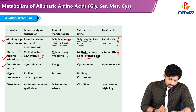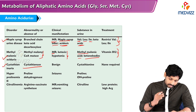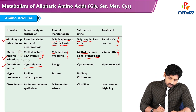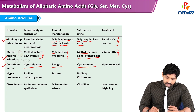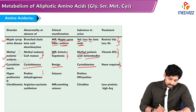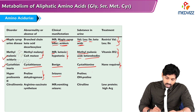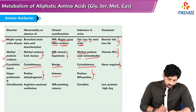Cystathionuria is caused by cystathionase deficiency, where cystine cannot be hydrolyzed. It is a benign condition; cystathionine accumulates and appears in the urine, and no treatment is required. Hyperprolinemia is due to proline dehydrogenase enzyme deficiency, leading to seizures. Proline and hydroxyproline appear in the urine.